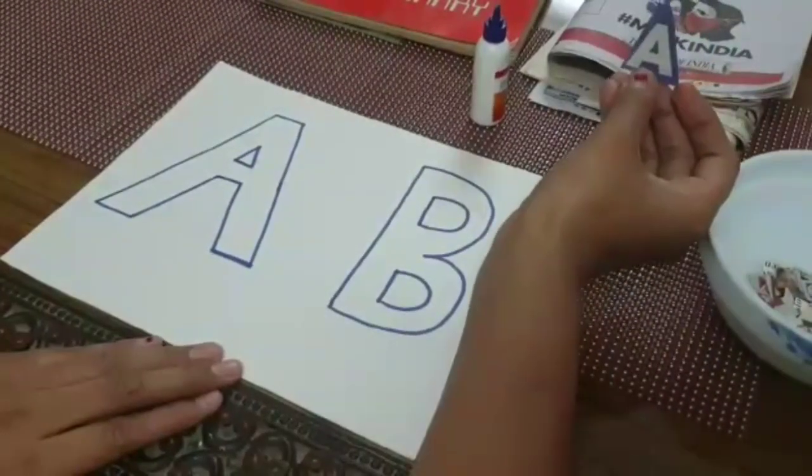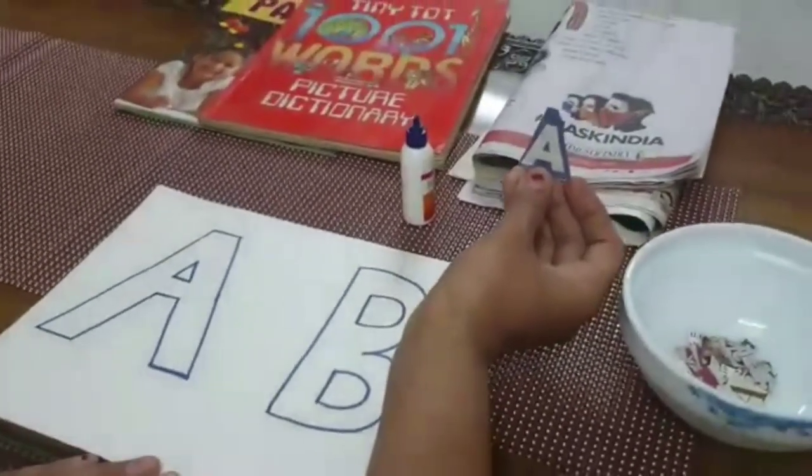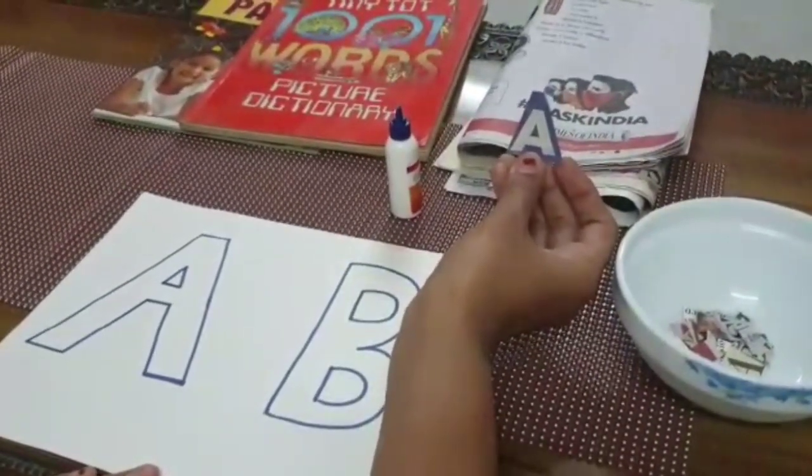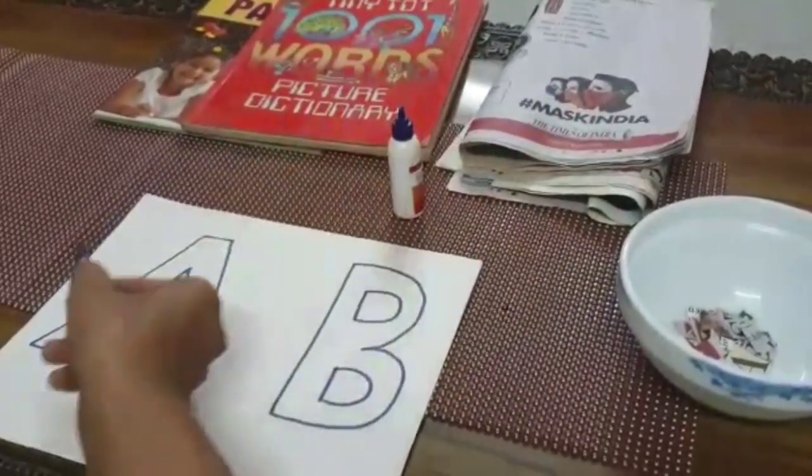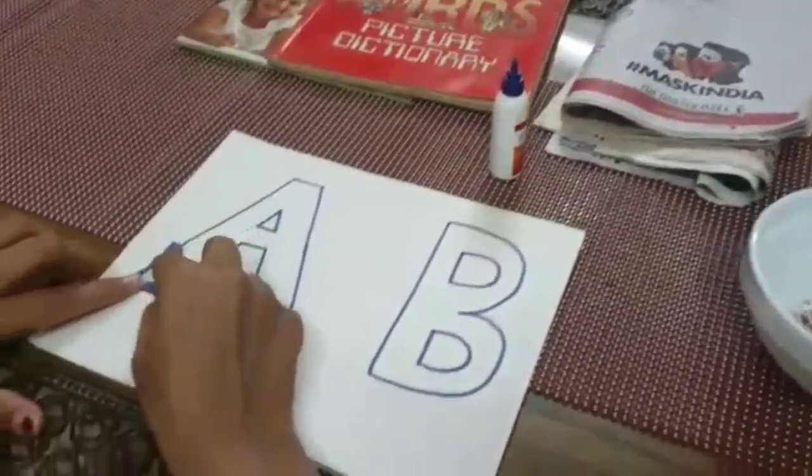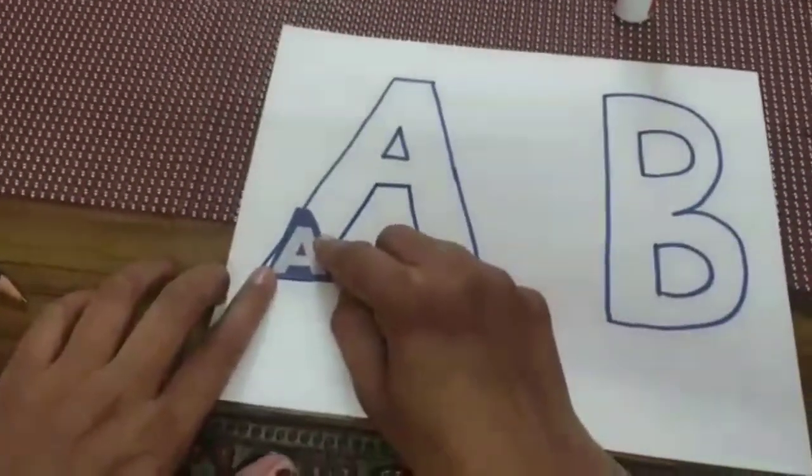Like in this case, I have got alphabet A and the sound of this alphabet is A. Now I am going to paste this alphabet on the correct letter.